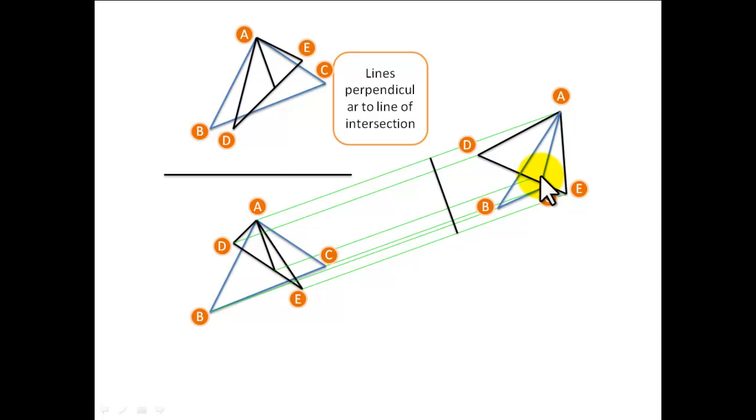These height lines are got from our original elevation. So we have this point, we bring it up. So from here to A is a true length of our line of intersection.